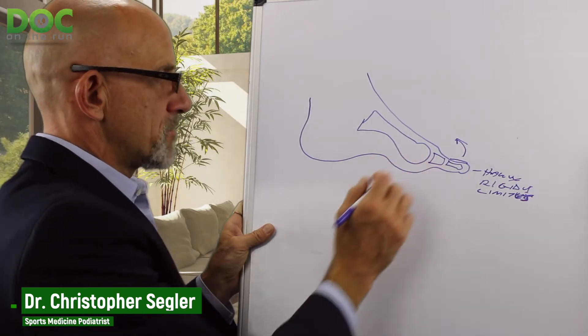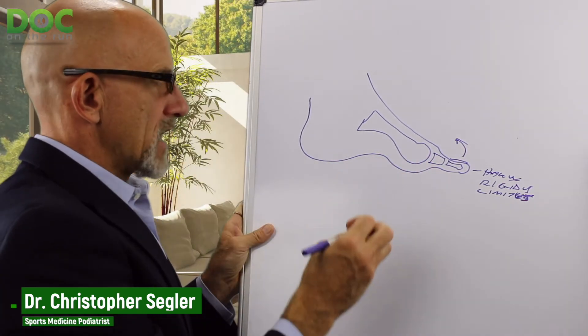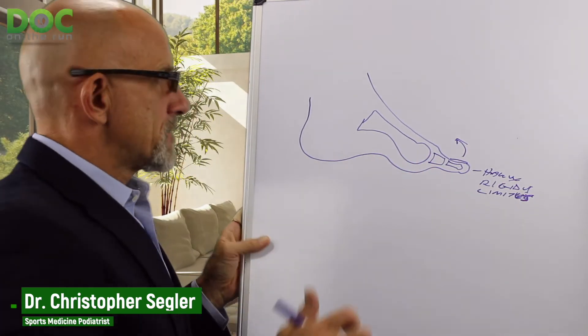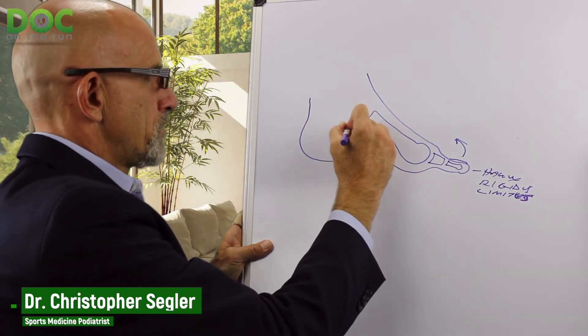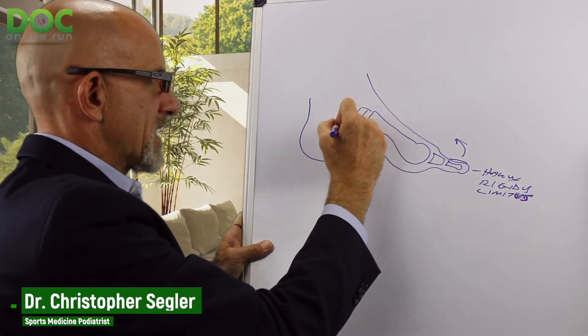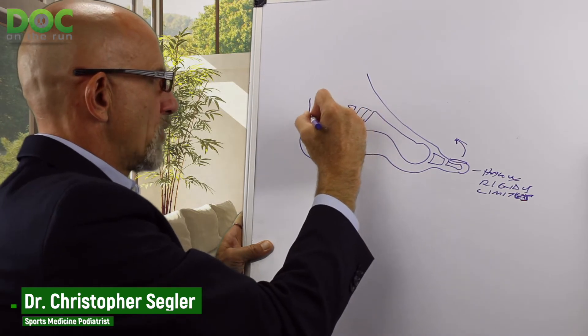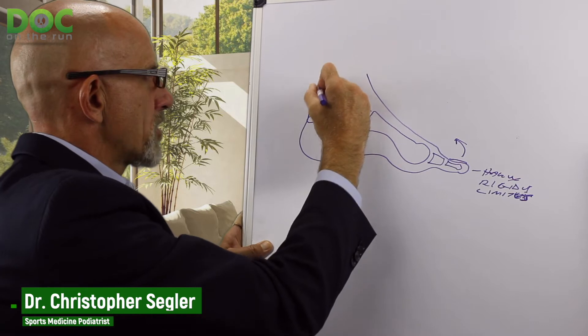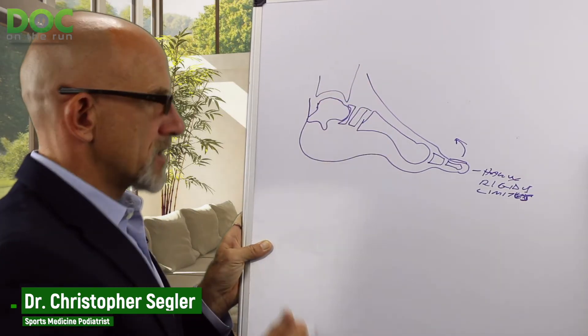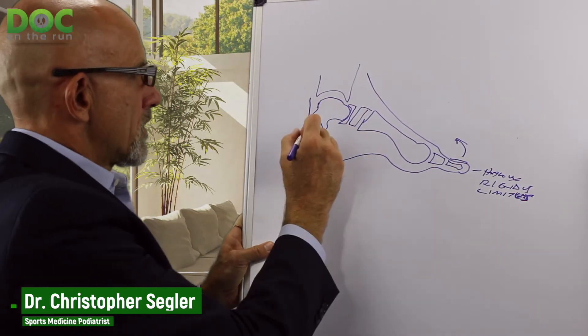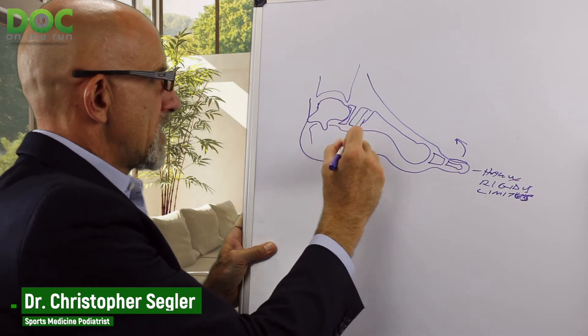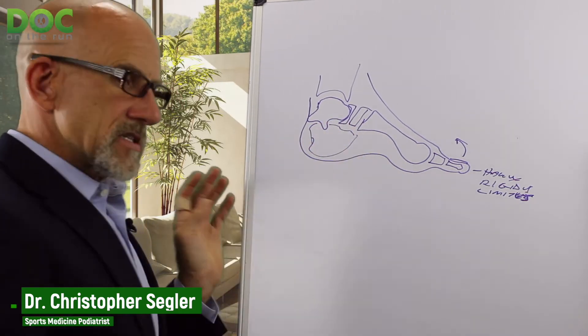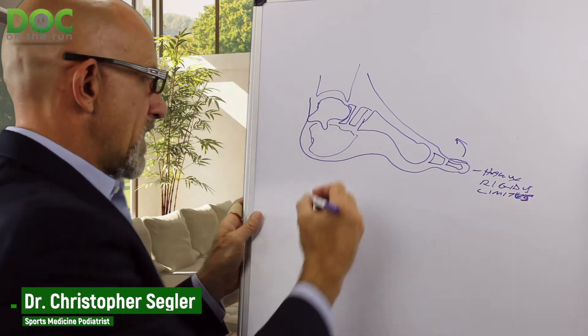But if you have a normal length metatarsal and you pronate, then that can cause this elongation of the first metatarsal that actually causes a real problem. And how does that happen? Your talus bone sits on top of your heel bone. That's the one that sits underneath your tibia or your shin bone. So you have the heel bone down here, and the talus pushes forward when you pronate.